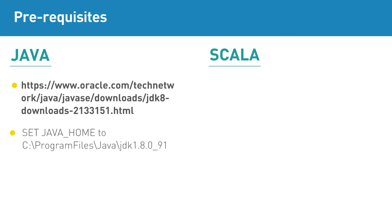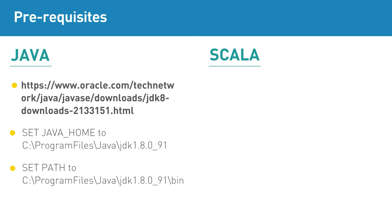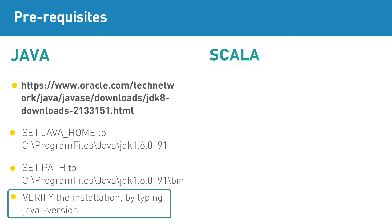Set PATH to C:\Program Files\Java\jdk1.8.0_91\bin. Verify the installation by typing java -version.